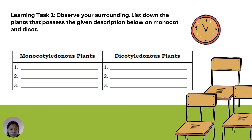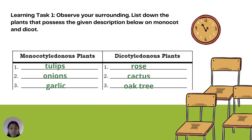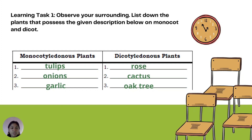Complete the column for monocotyledonous plants and dicotyledonous plants. Some answers are: for monocotyledonous plants — tulips, onions, and garlic; for dicotyledonous plants — rose, cactus, and oak tree.